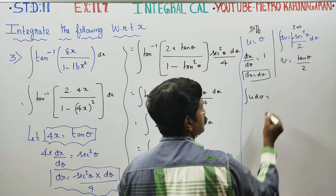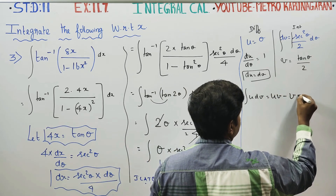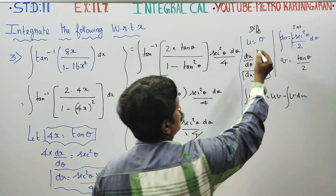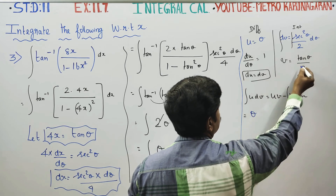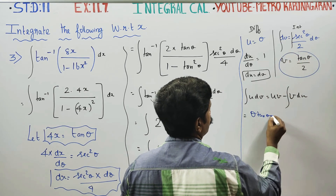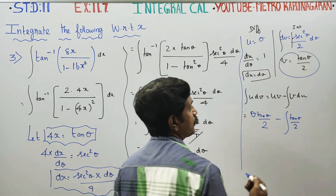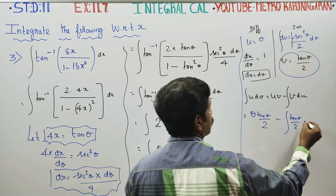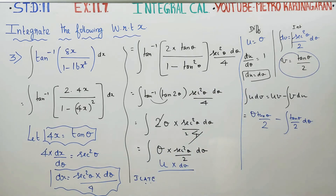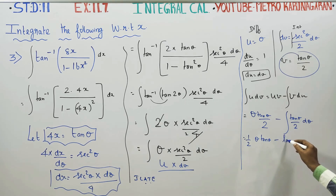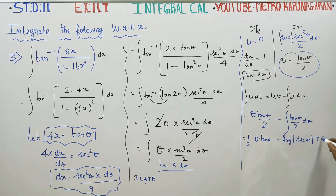The integration by parts formula is: integral of u dv equals uv minus integral of v du. So we get: theta into tan theta by 2, minus integration of tan theta by 2 into d theta. Integrating tan theta gives logarithm of secant theta. So the result is theta times tan theta by 2, minus logarithm of secant theta by 2, plus c.